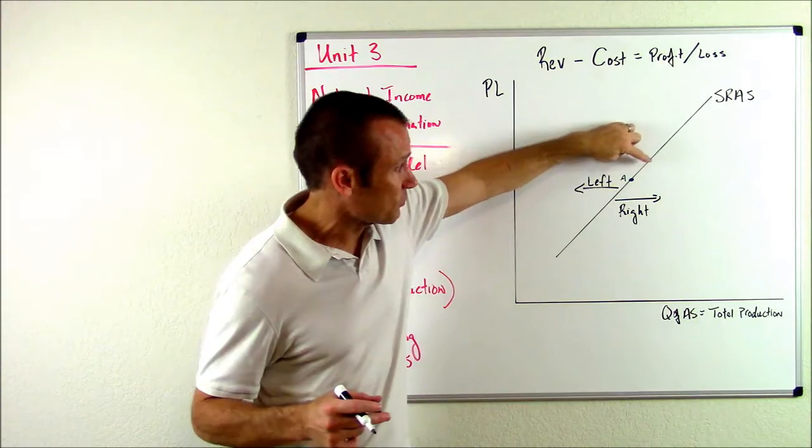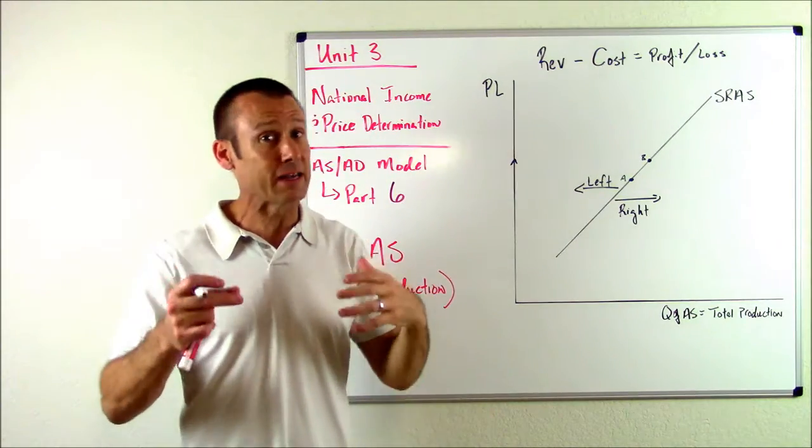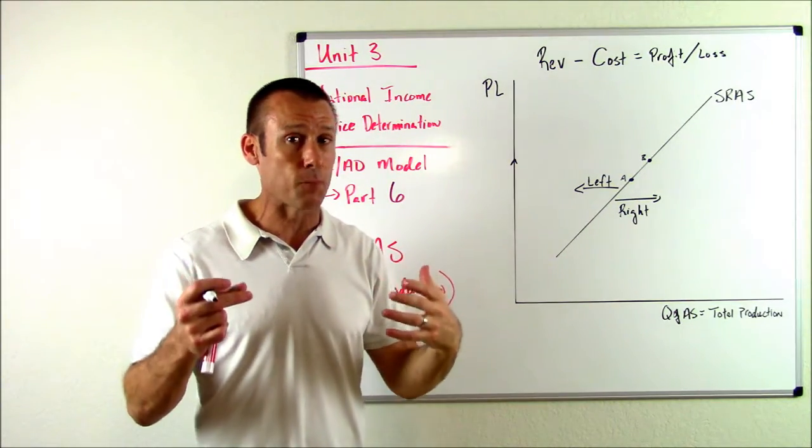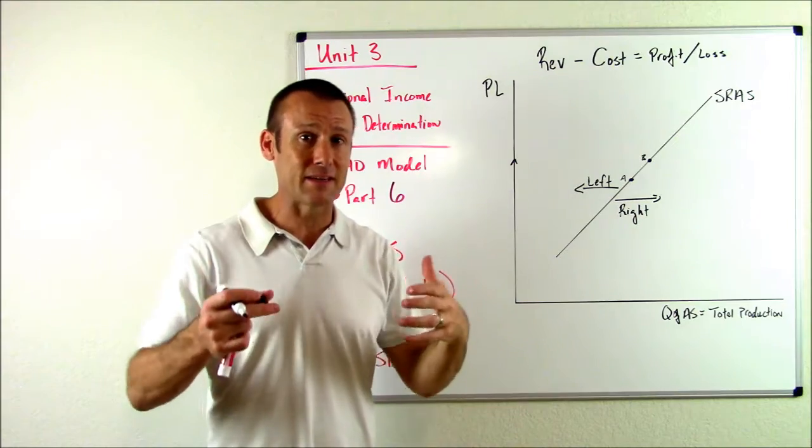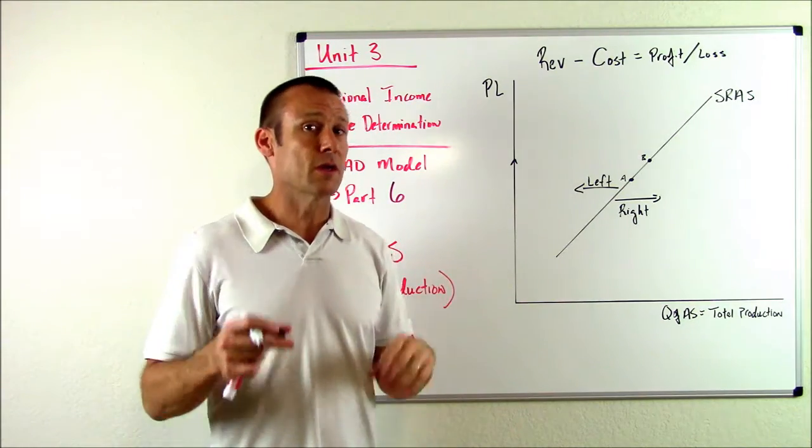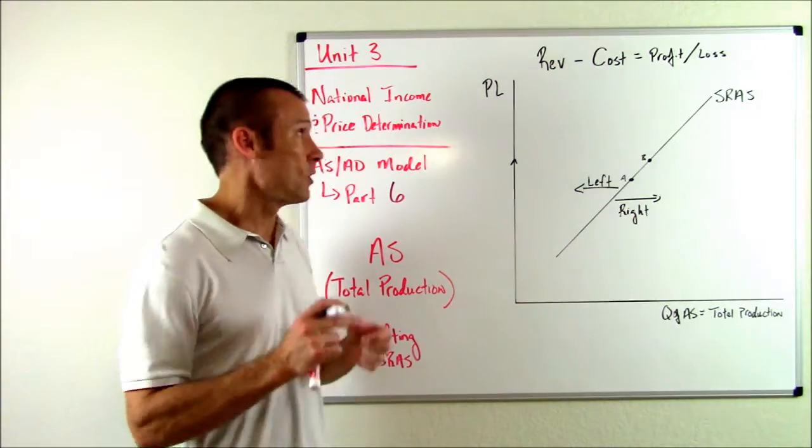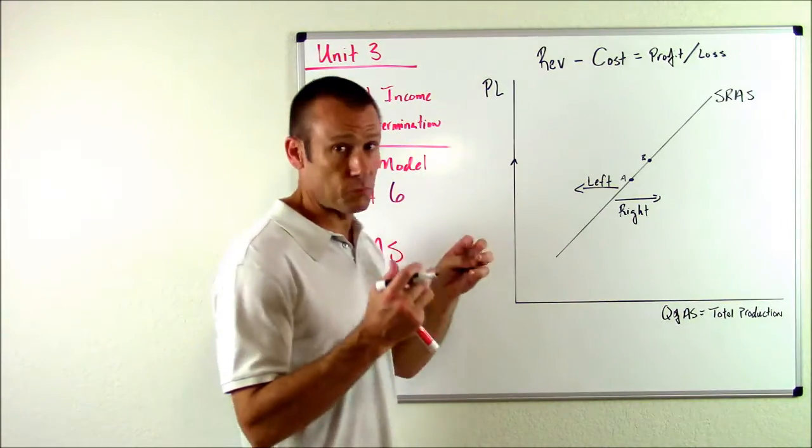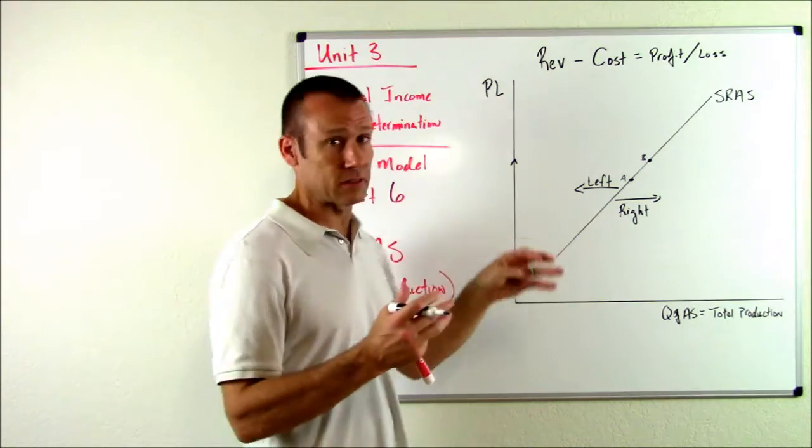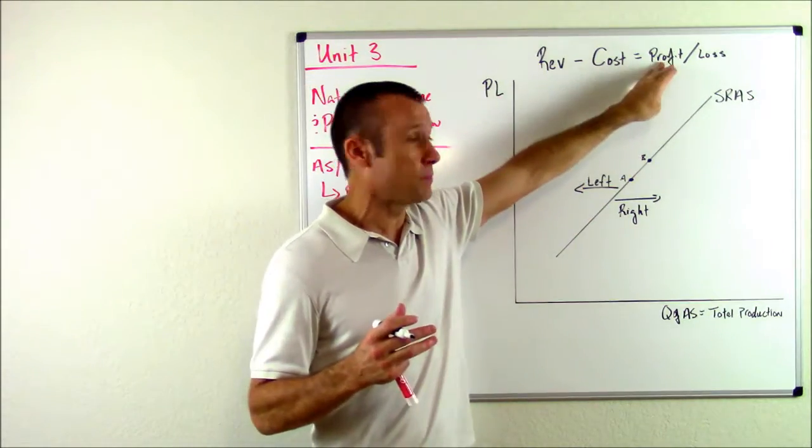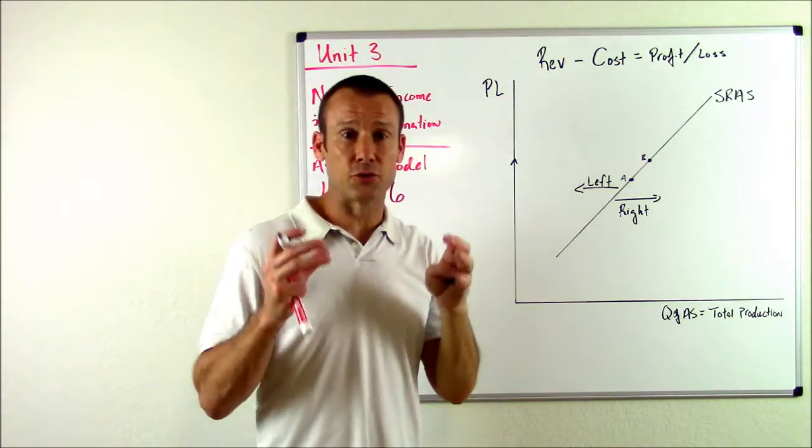So once again, what causes this movement along the SRAS, i.e. what causes the SRAS to be upward sloping, is the stickiness of wages. This video, though, is focused on what shifts the SRAS.